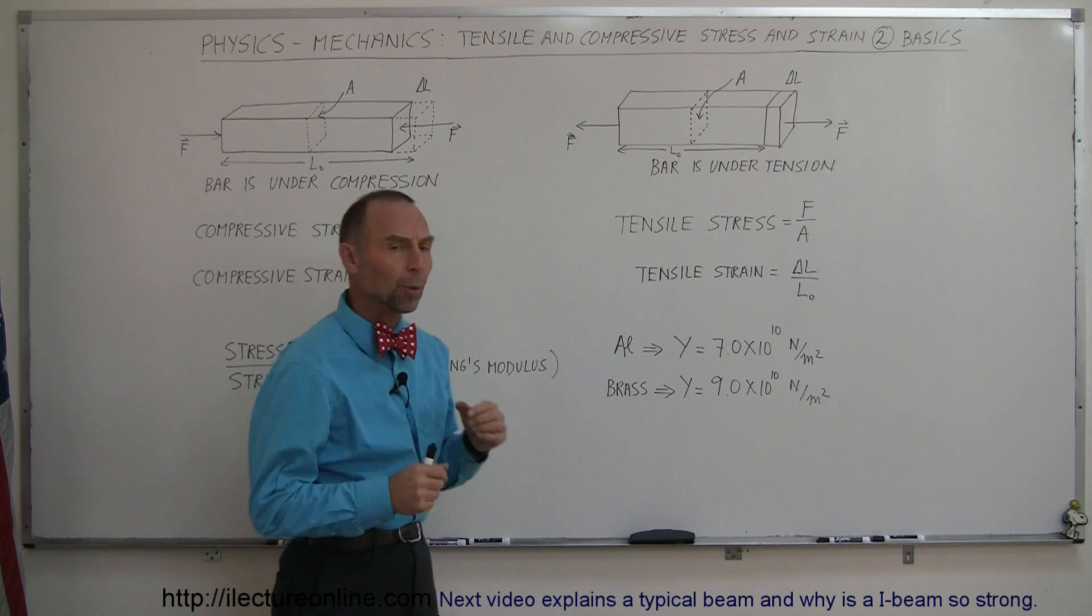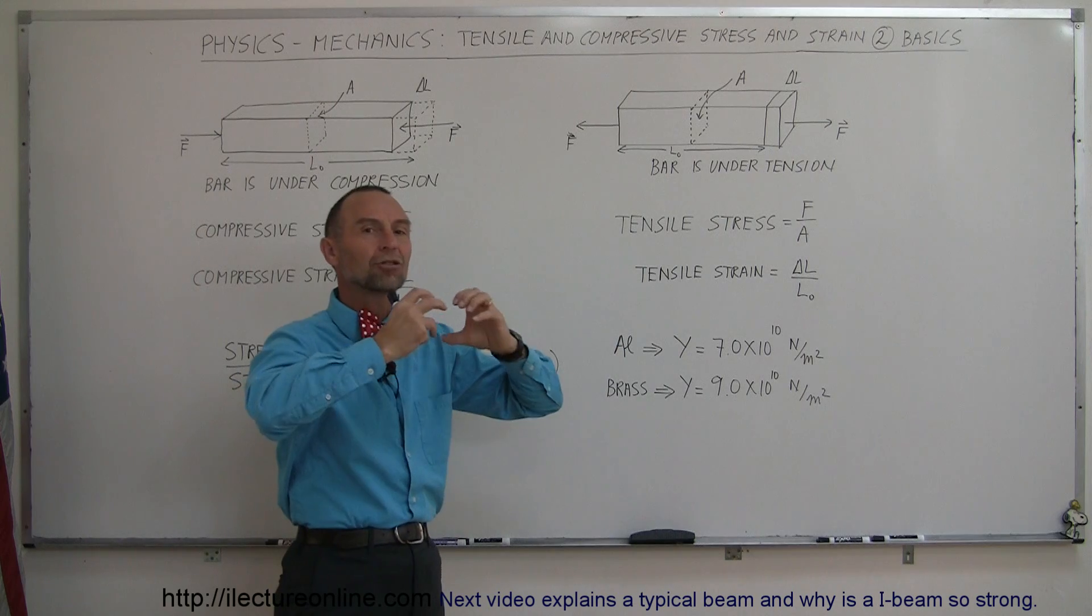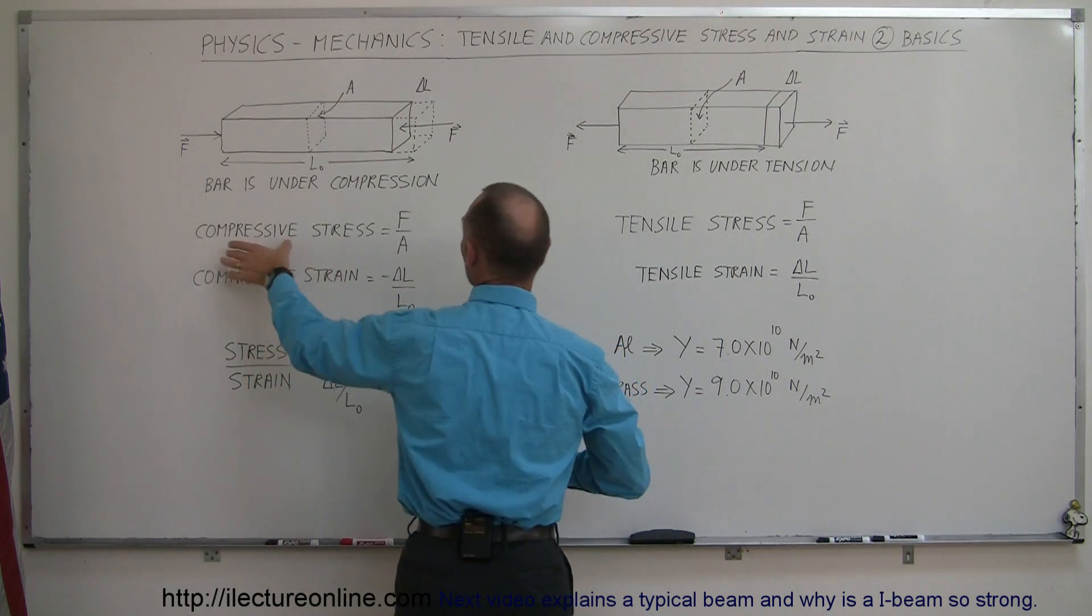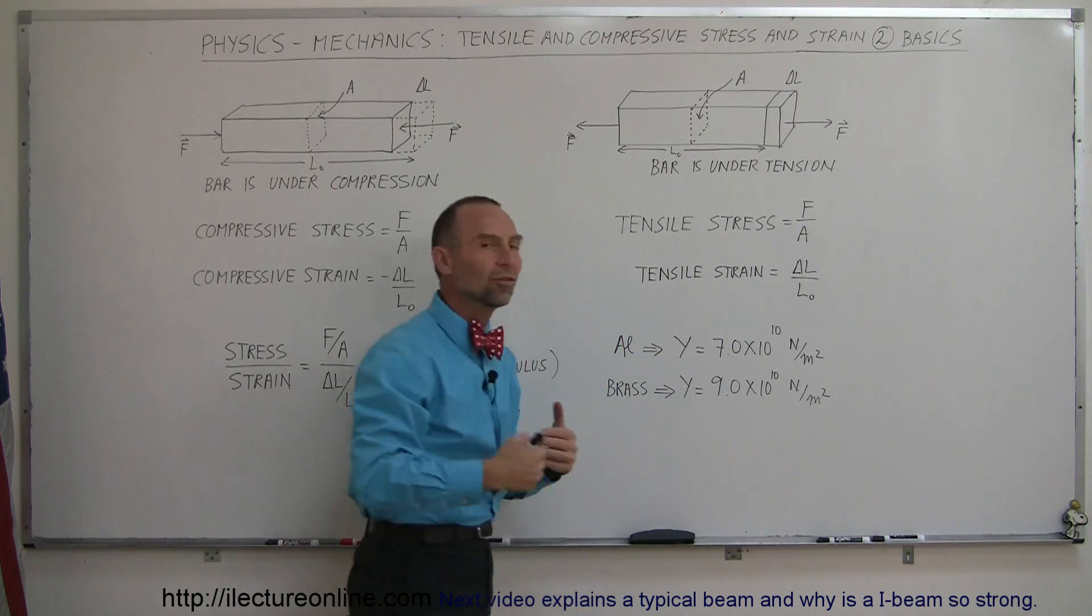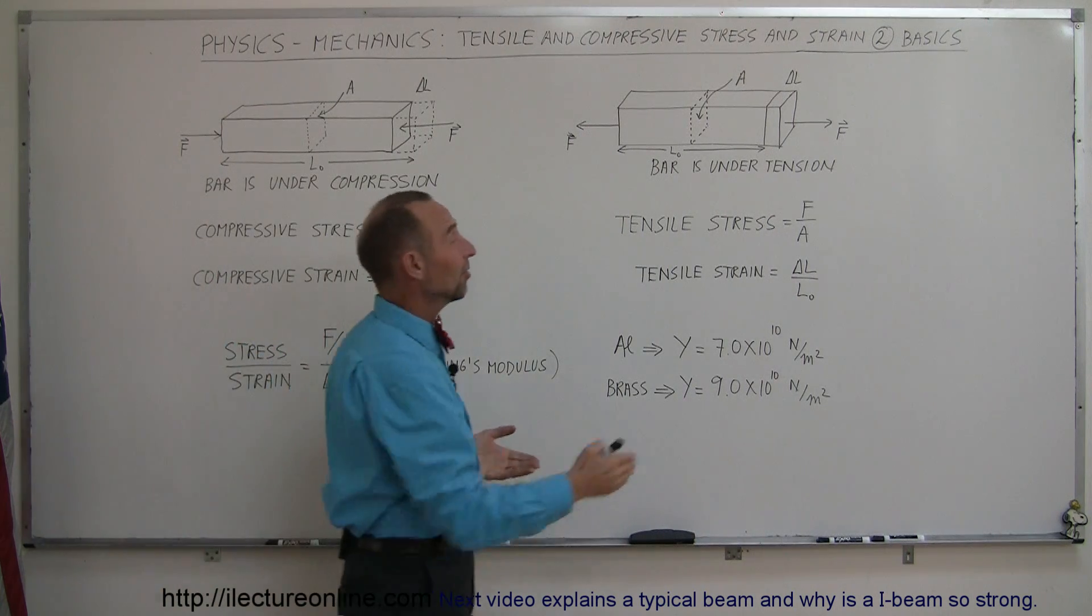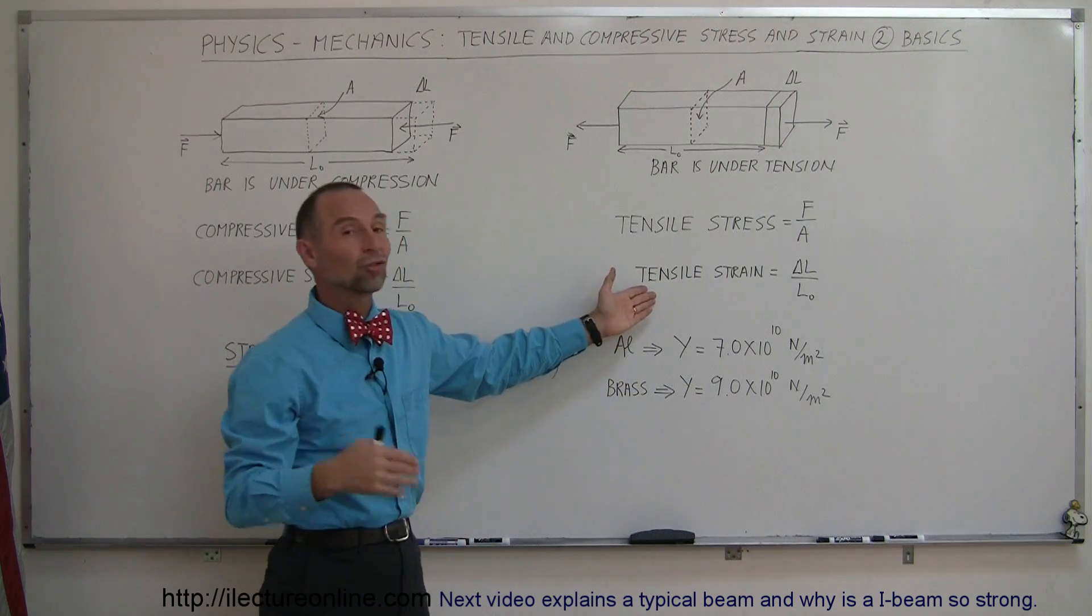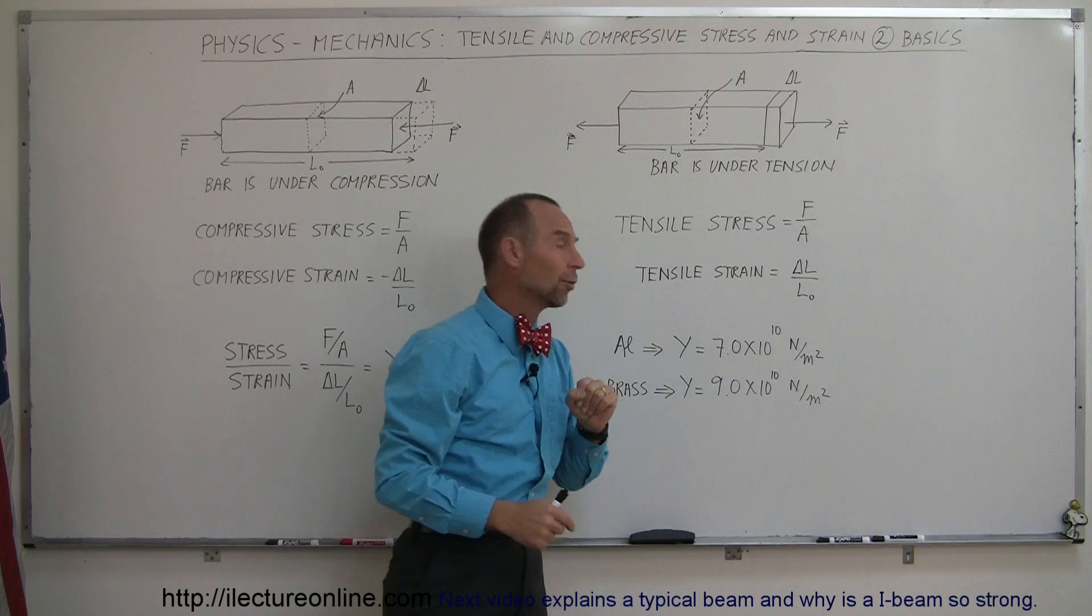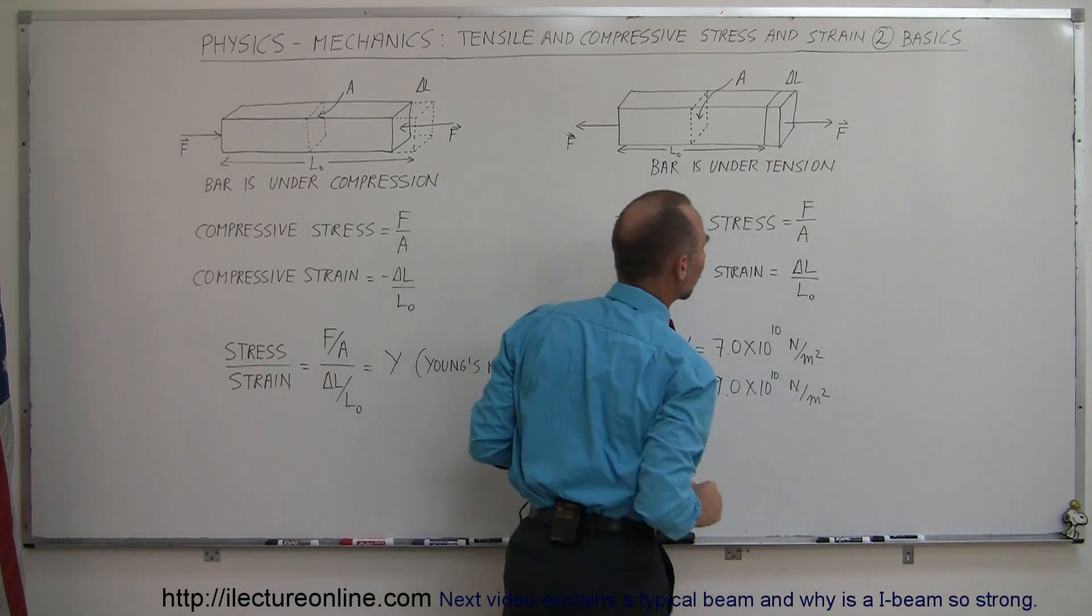We now say that the bar is under tension. We're pulling on the bar, trying to make it longer. That's called tension. Instead of calling it compressive stress, we call it tensile stress since we're pulling on it. Tensile stress is defined exactly the same way: force divided by area. The tensile strain is the deformation divided by the original length. Notice here, delta L is positive since the bar is longer.